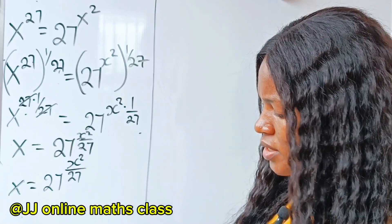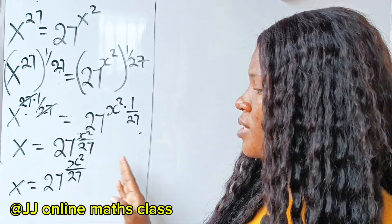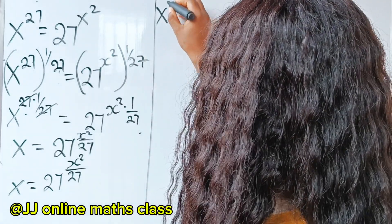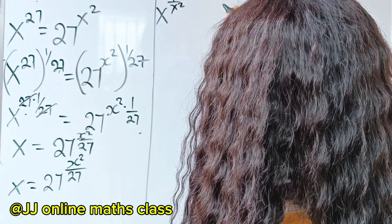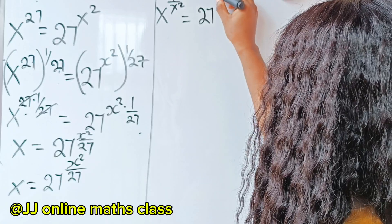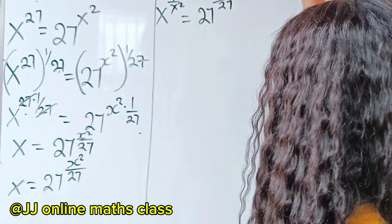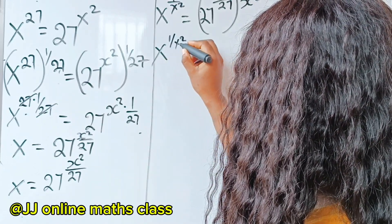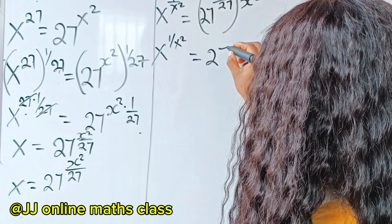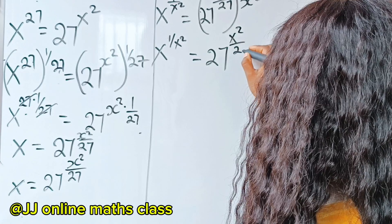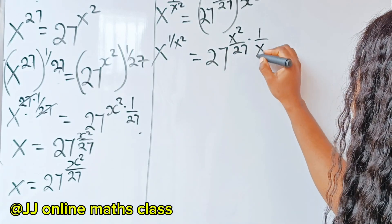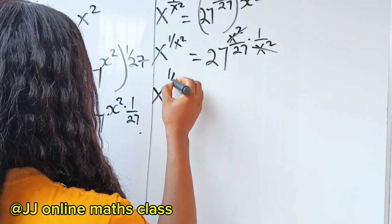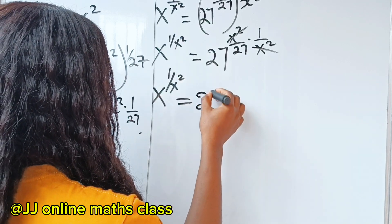Now we continue. I want to remove this x squared, and the only way to do that is to raise each side of this equation to the power of 1 over x squared. So I will write x raised to the power of 1 over x squared, is equal to 27 raised to the power of x squared divided by 27, everything raised to the power of 1 over x squared. So we have x raised to the power of 1 over x squared is equal to 27 to the power of x squared divided by 27, multiplied by 1 over x squared.